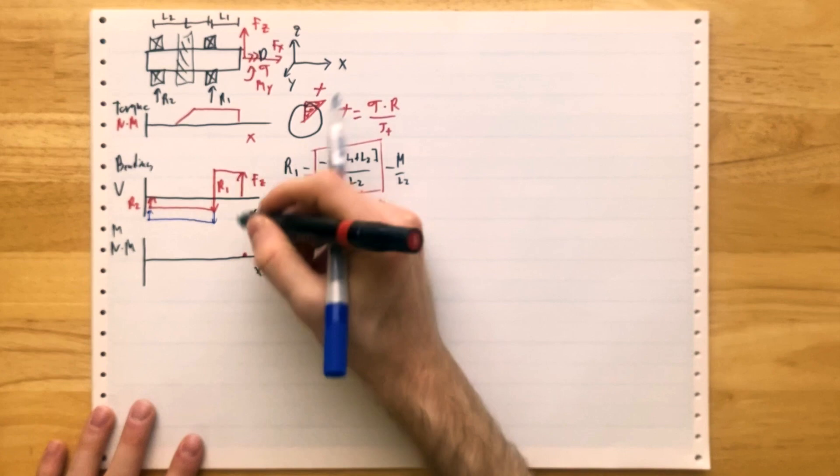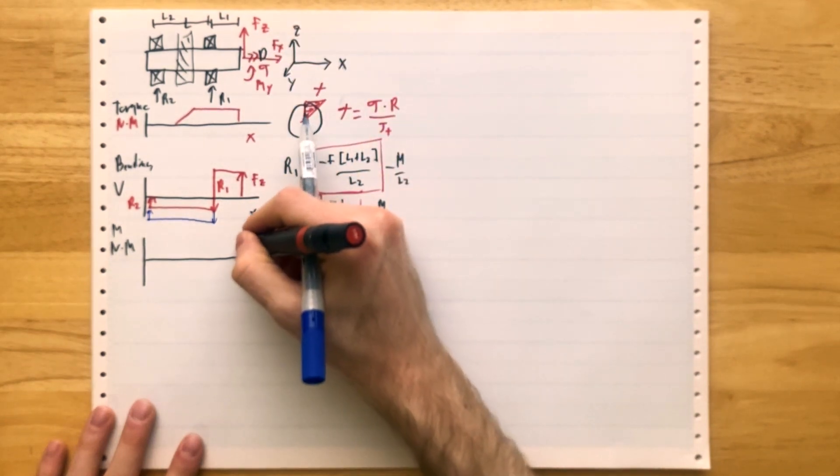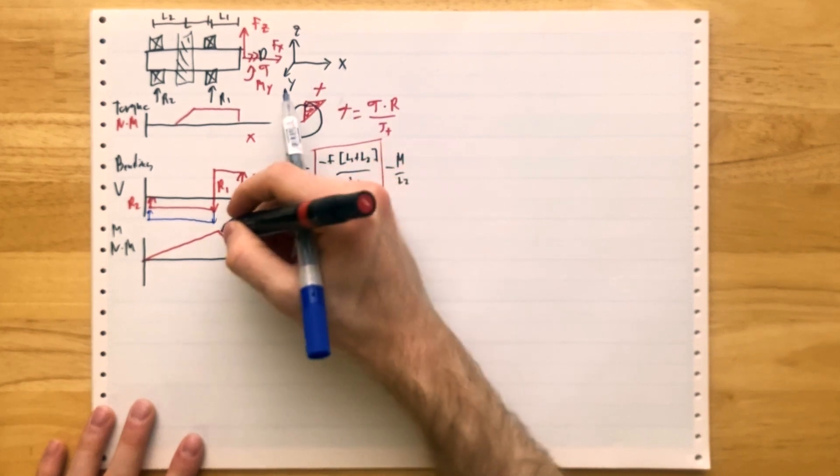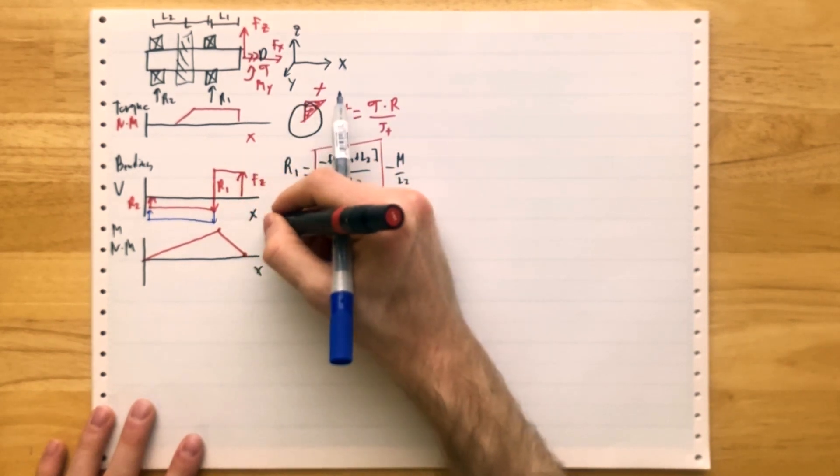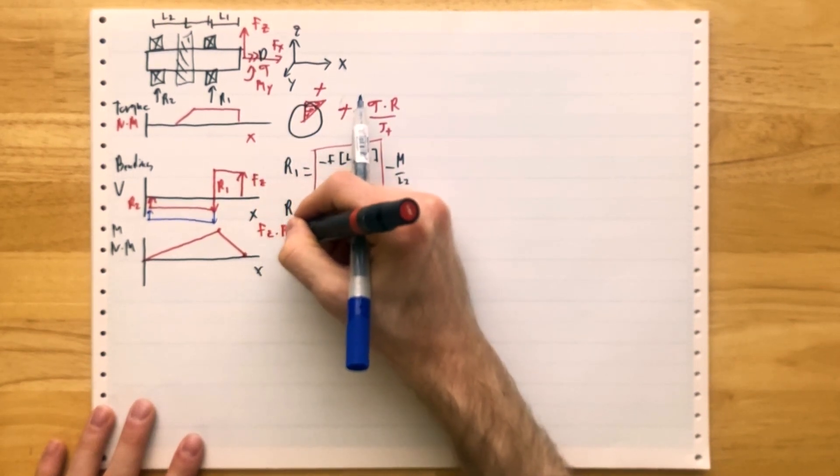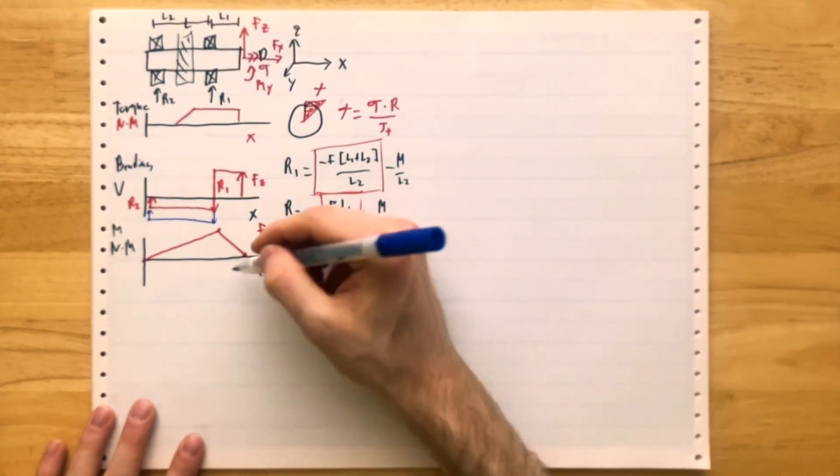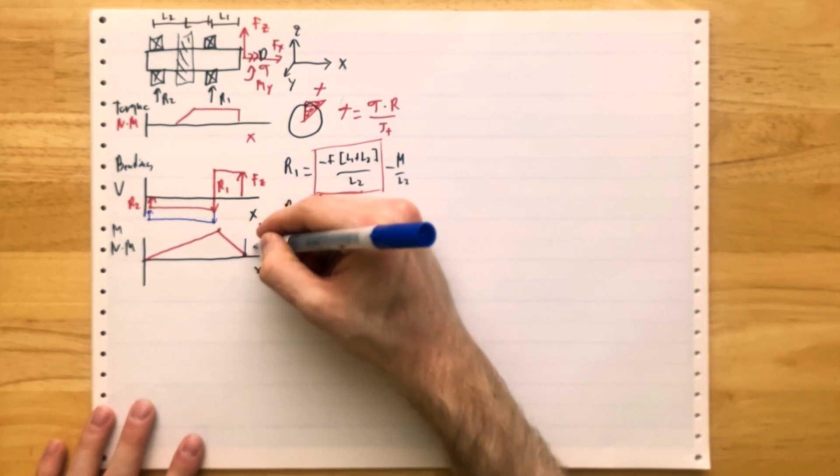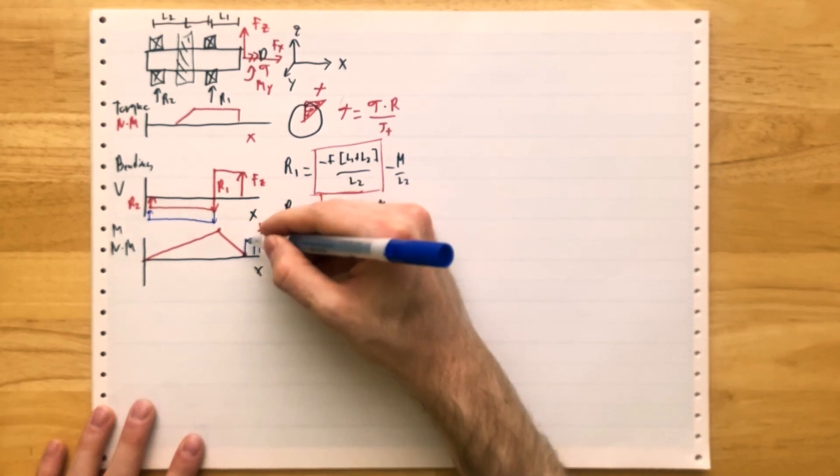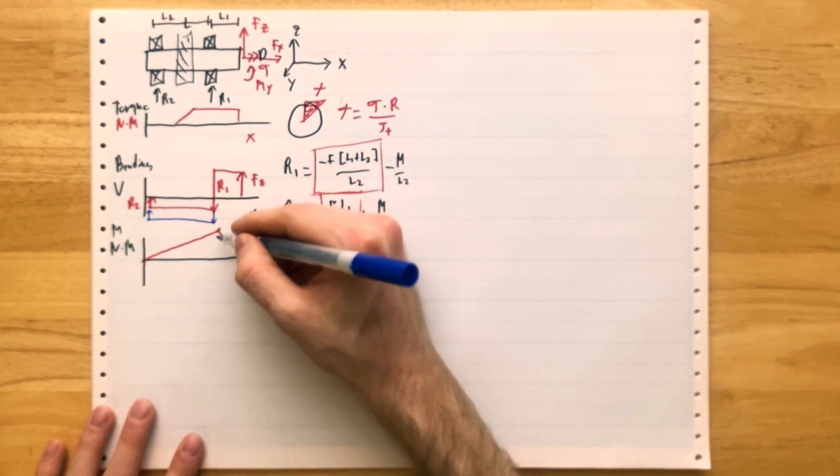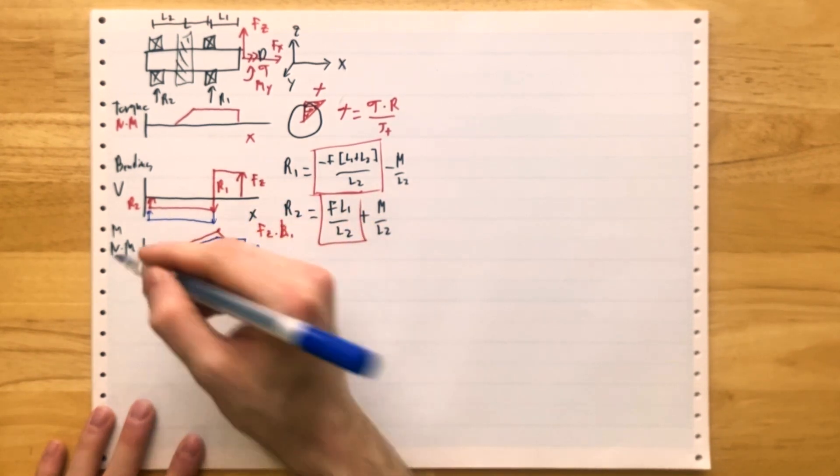But when you go to the moment diagram, the story gets a little bit different. So we'll start at zero, because at the end of the shaft, just go up, and then go back down. And if we're just looking at the contribution of Fz, that peak moment would be Fz times L1. However, the moment appears immediately, that moment M shows up right away. And it's constant until it hits that reaction, and then it starts to trail off as well.